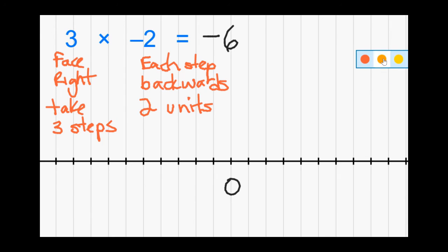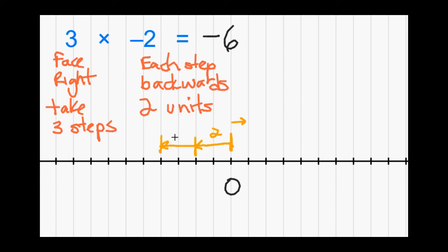On our number line we start at zero, facing toward the positives. But this time we walk backwards two units per step. Step one is two units backwards, step two, step three — each two units long going backwards. We end at negative 1, 2, 3, 4, 5 — we ended at negative 6. We faced right but walked backwards two units each step for three steps.